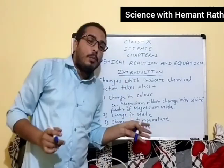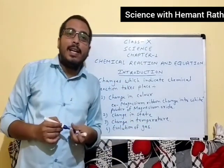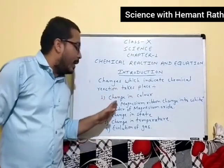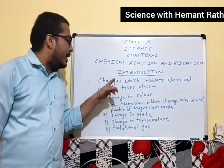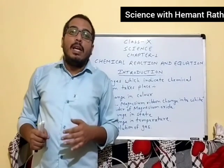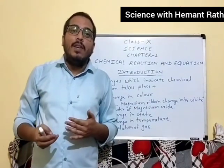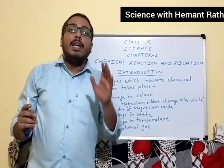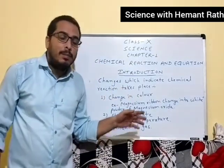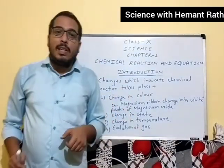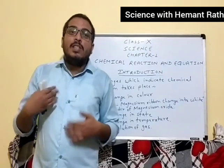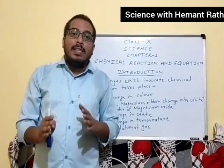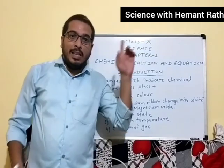These four points indicate whether a chemical reaction has taken place or not. First point is change in color — if any change in color takes place in a reaction, we can say that a chemical reaction has taken place. Second one is change in state — if any substance changes its state, then we can say that a chemical reaction takes place in that process.